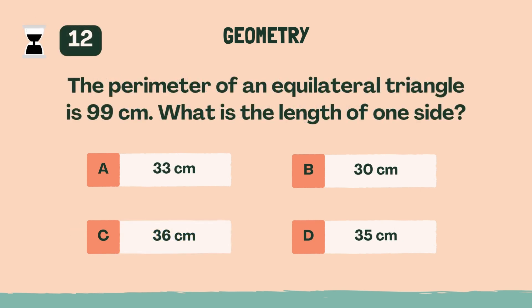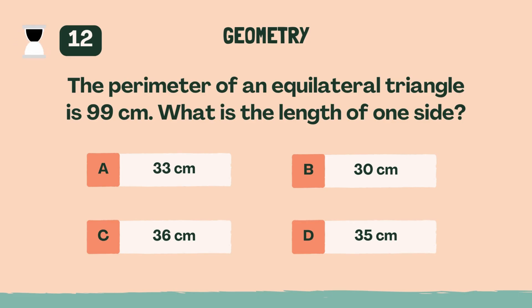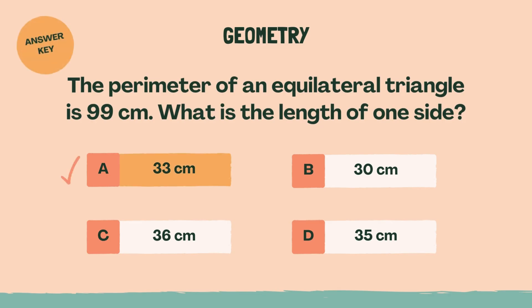The perimeter of an equilateral triangle is 99 centimeters. What is the length of one side? A, 33 centimeters.